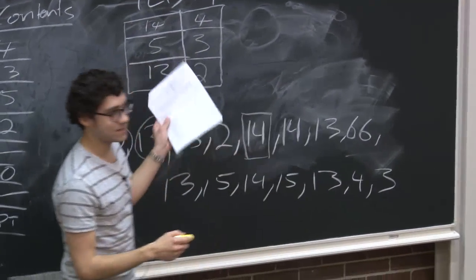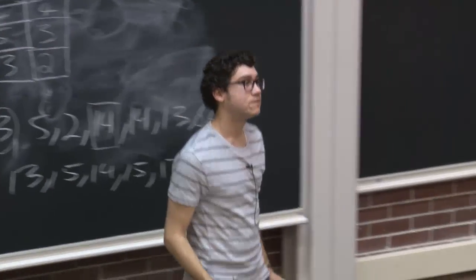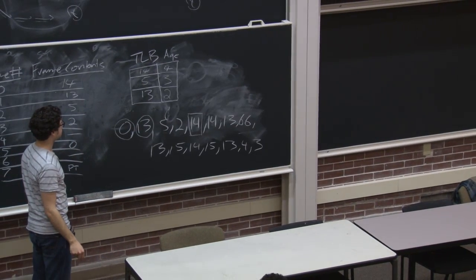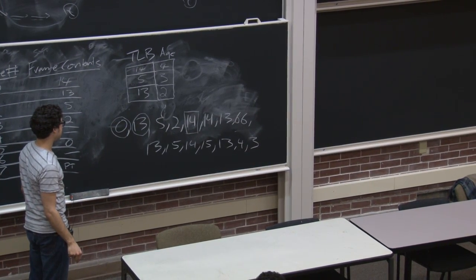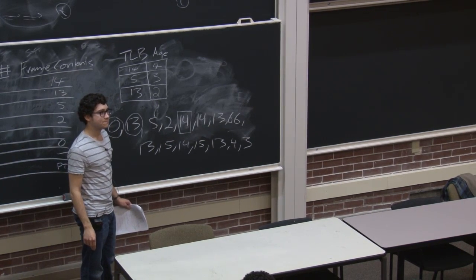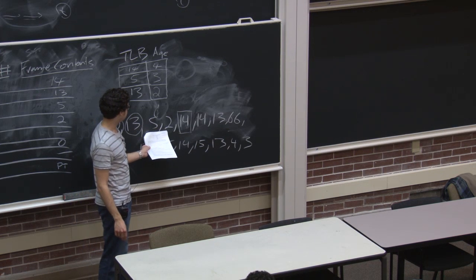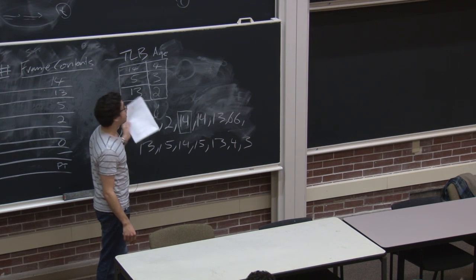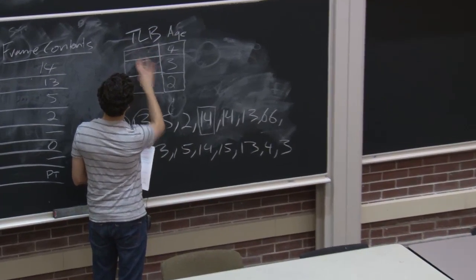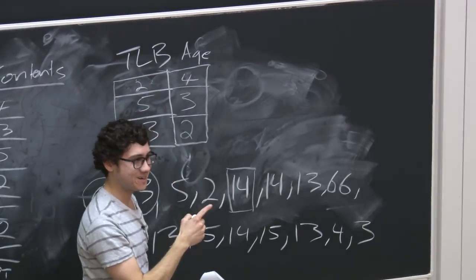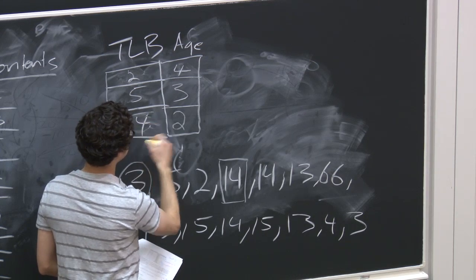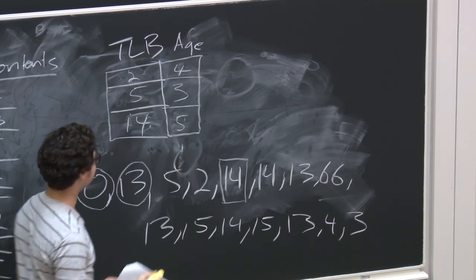A student corrects the TLB state: when we accessed virtual page 2, we added it back to the TLB, so 2 replaced 0, and 14 then replaced 13 — not 0. The corrected TLB state would have 2, 5, and 14. This correction demonstrates the importance of tracking LRU ages carefully.